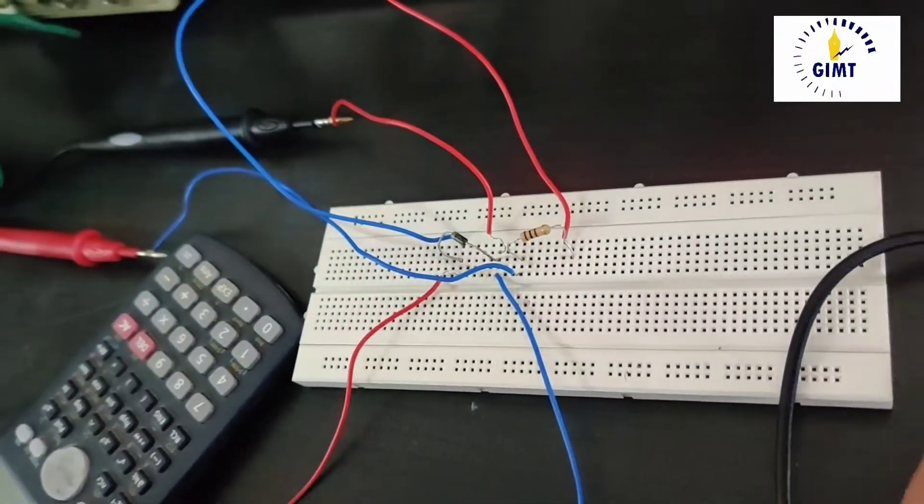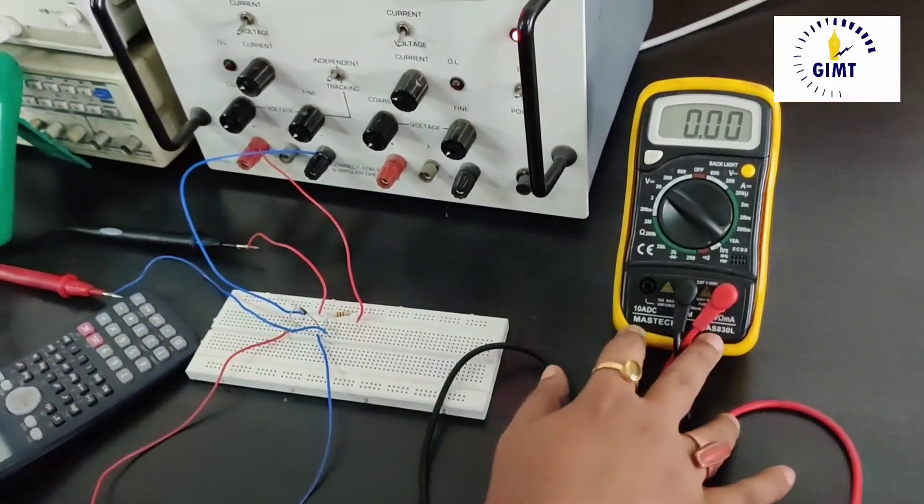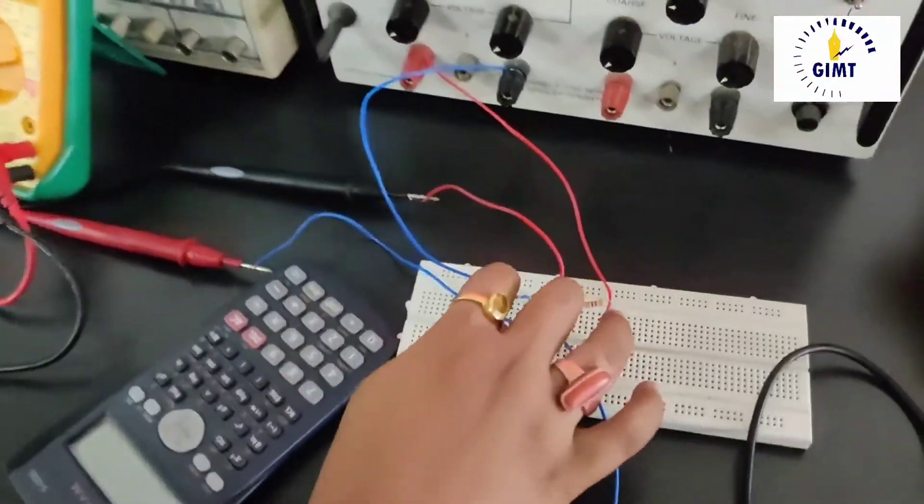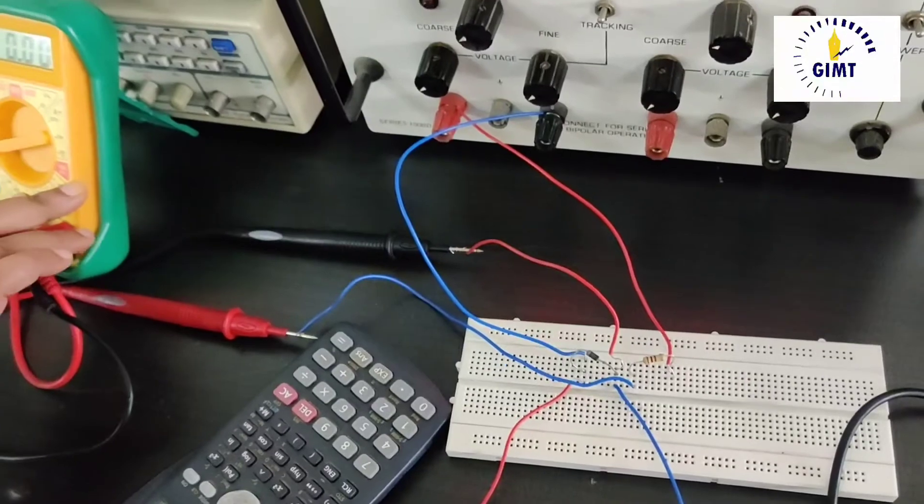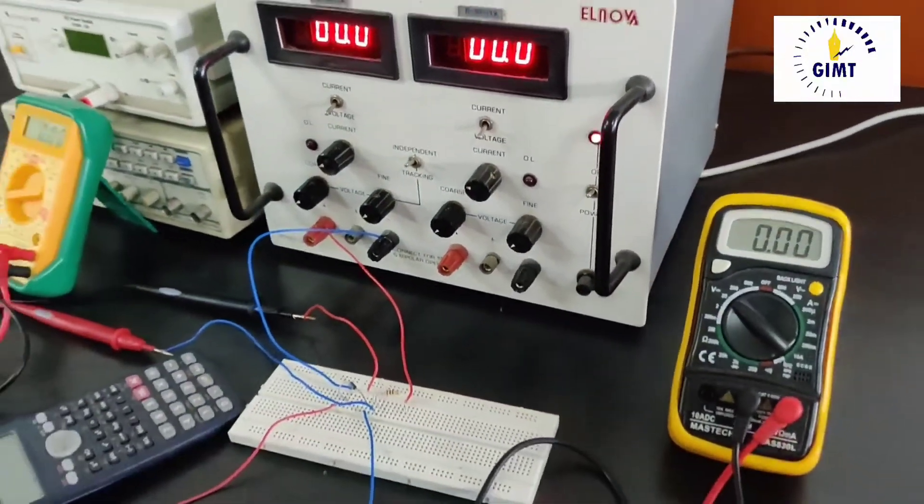This is the multimeter which is connected across the diode to measure the diode voltage Vd. And this is the multimeter which is connected in series with the diode to measure the diode current ID. And here it is connected to the variable DC supply.